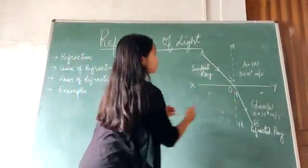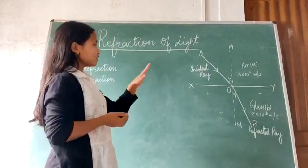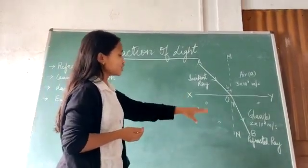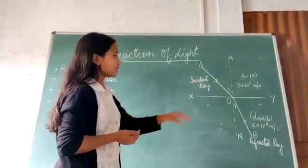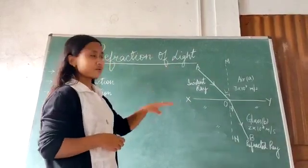And this ray, it will bend towards this normal MON. But on the other hand, if this ray of light, when it passes through a medium in which this speed of light increases, that is, it goes from this glass, which is denser, to this air, which is rarer, then this ray of light, it will bend away from the normal.